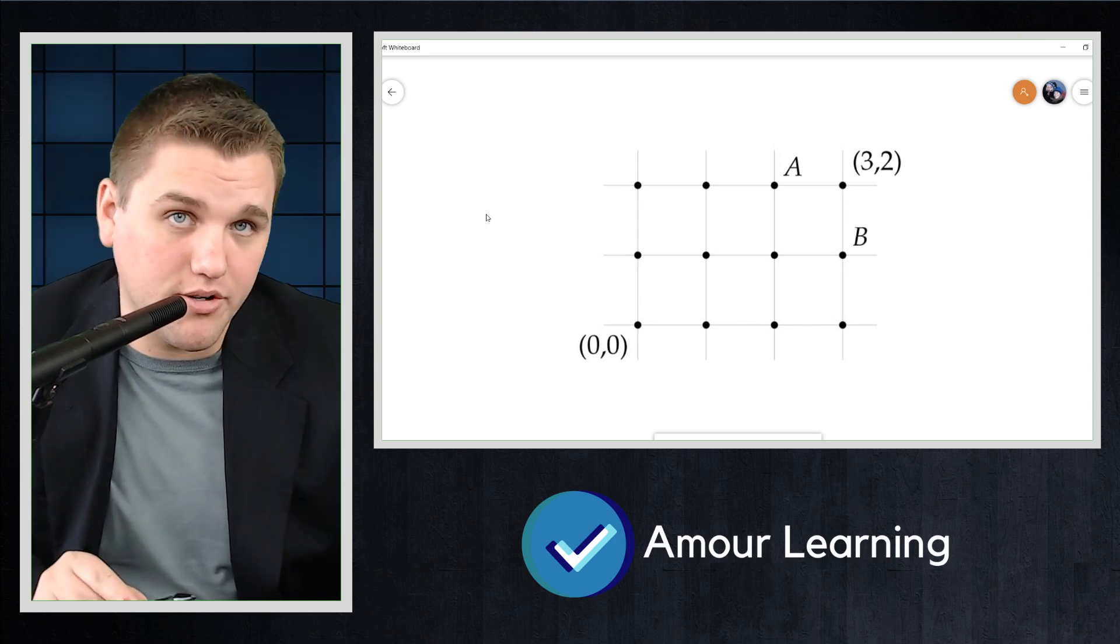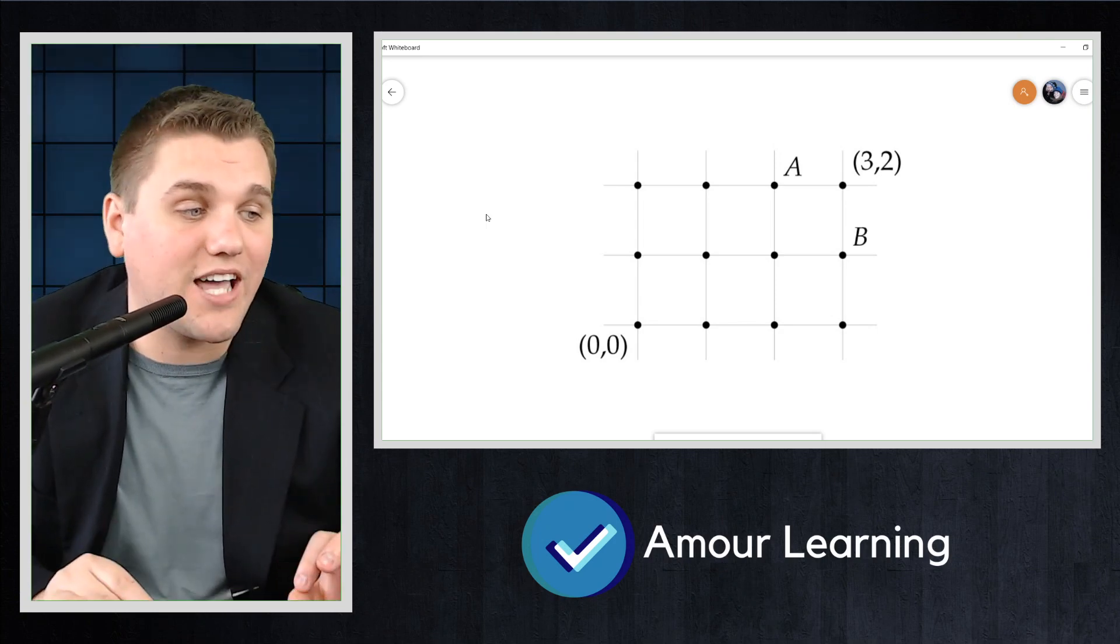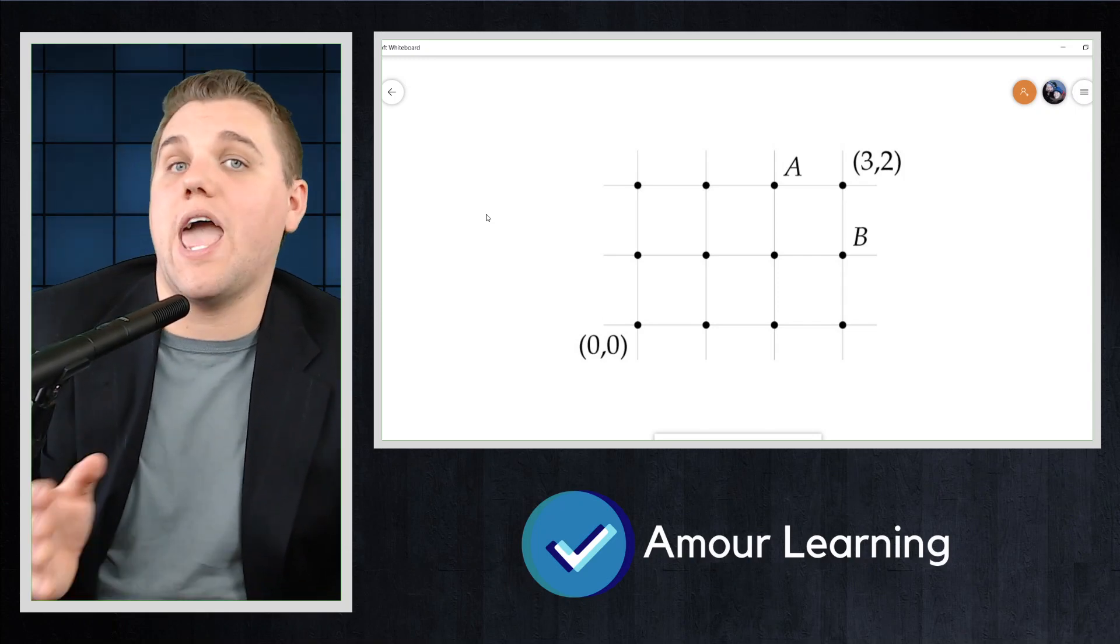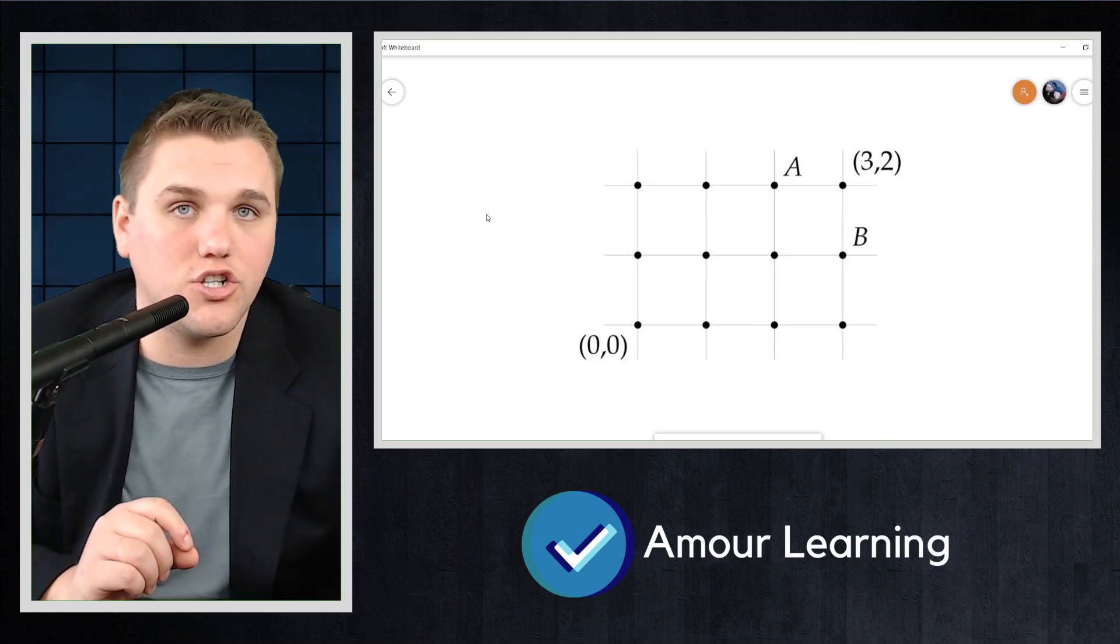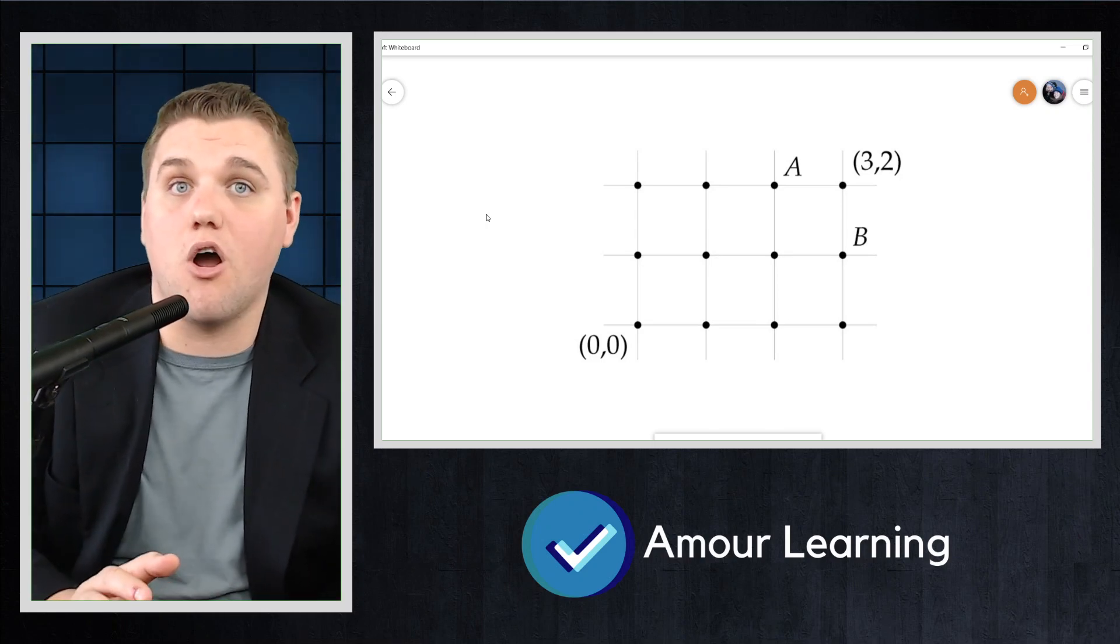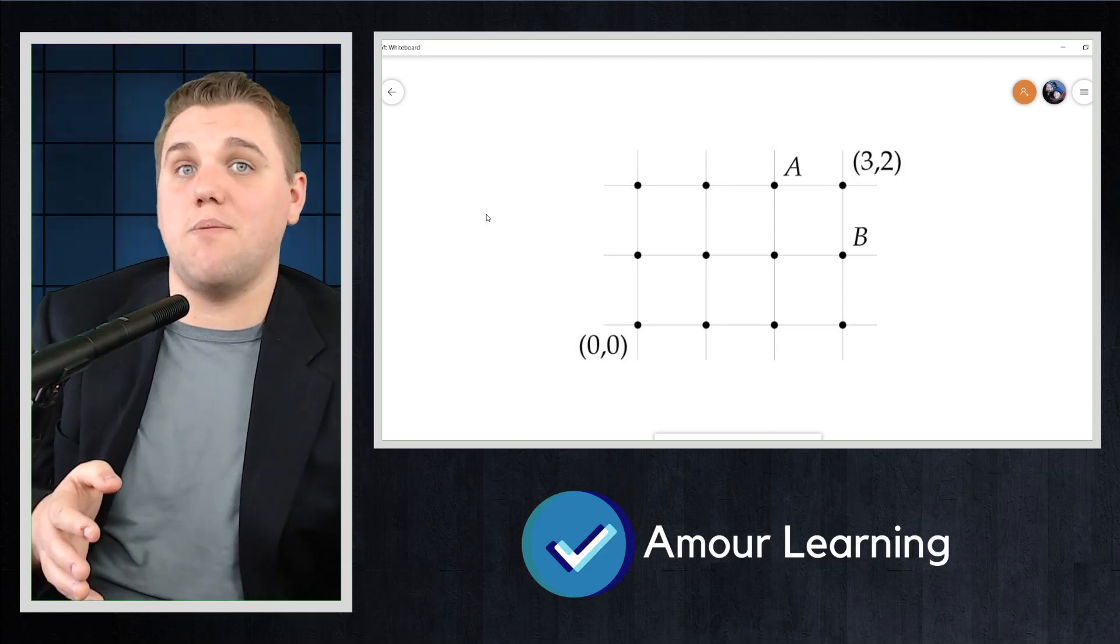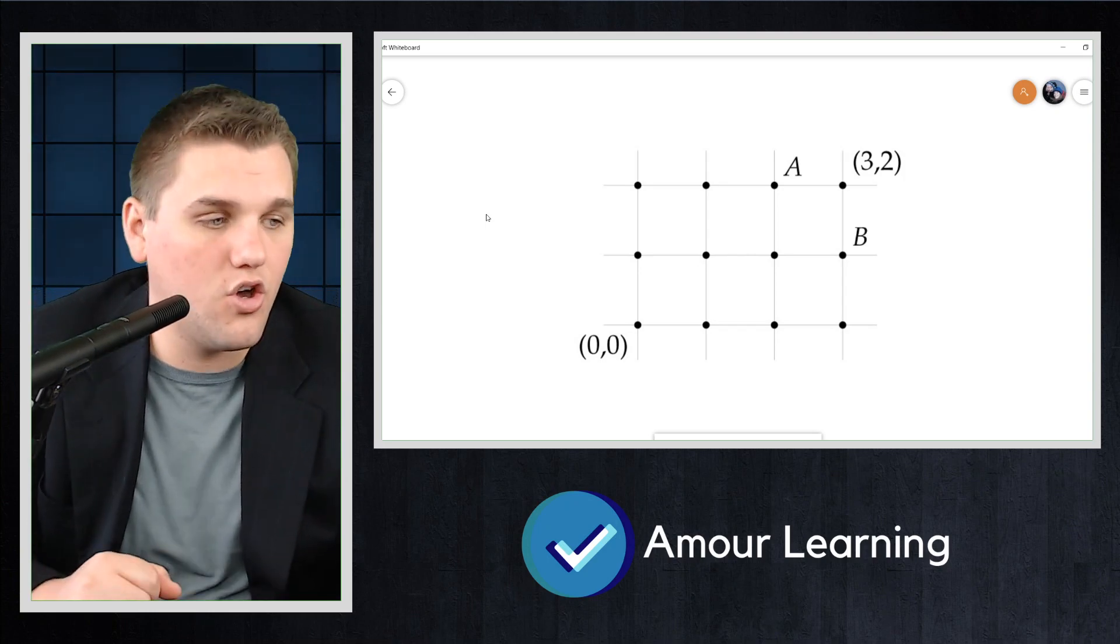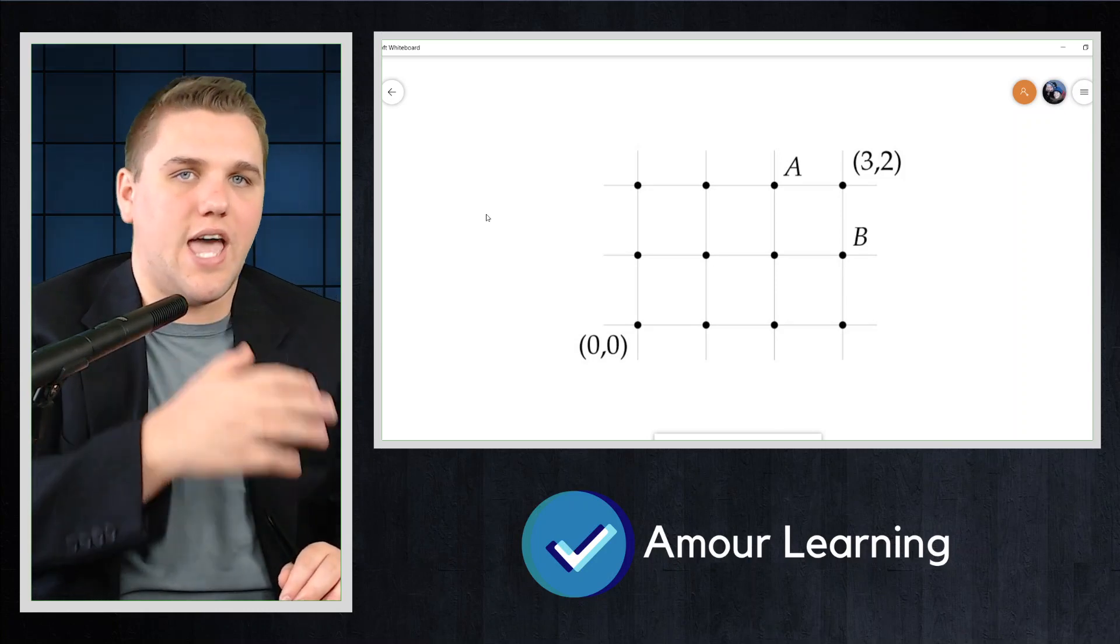Any lattice path from 0, 0 to 3 comma 2 must pass through exactly one of A and B. The point A is four steps away from 0, 0 and two of them are towards the right. The number of lattice paths to point A is the same as the number of four bit strings of weight two, which is six. So there are six ways of going from 0, 0 to A.